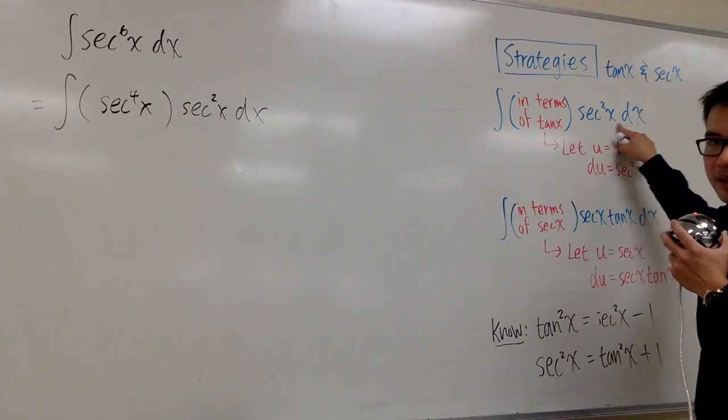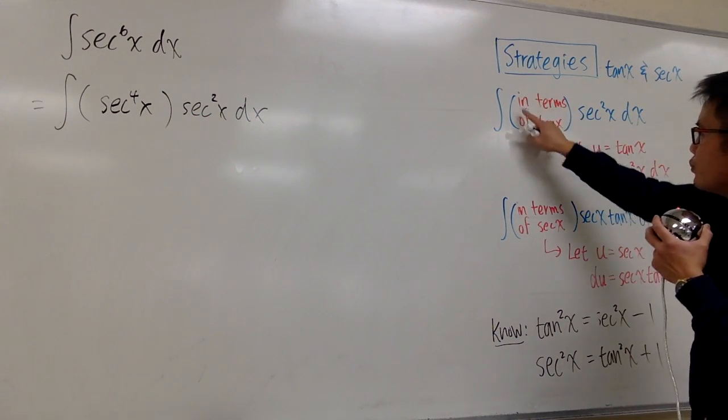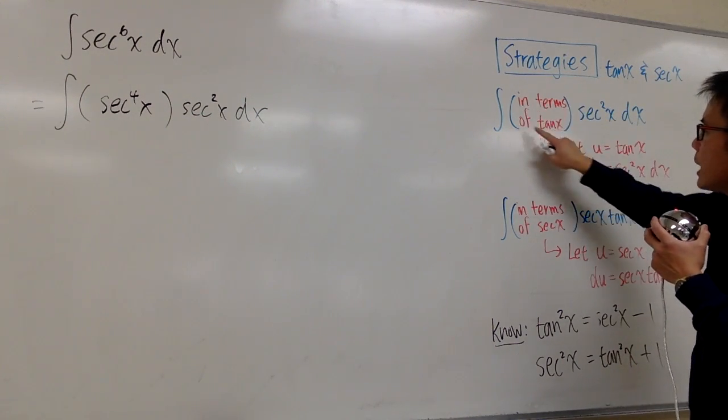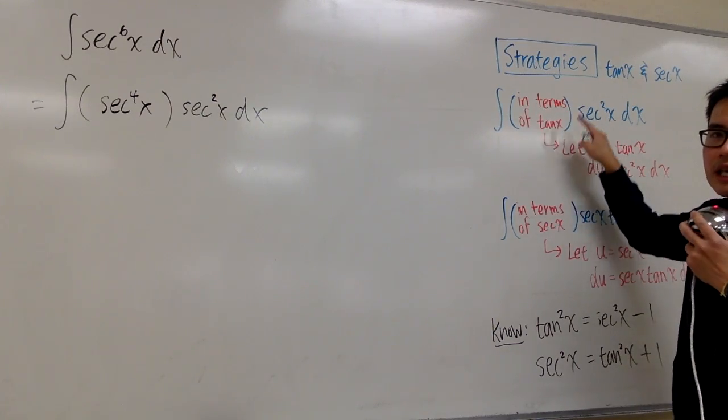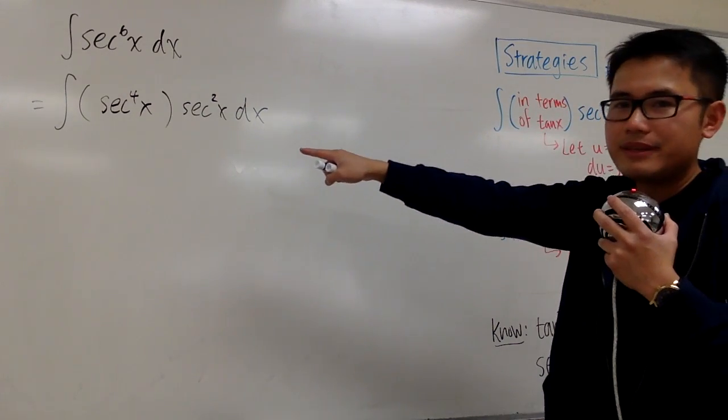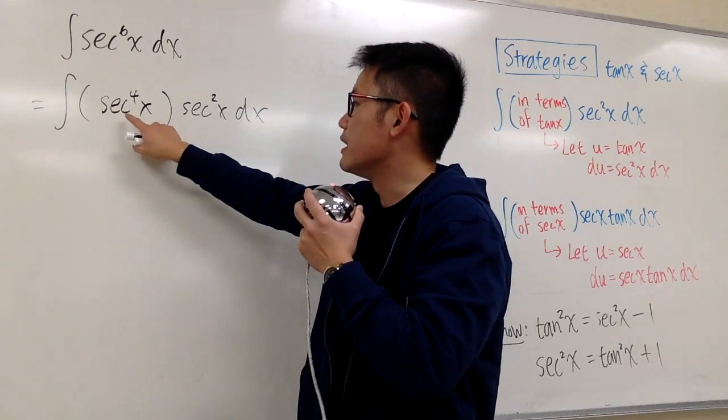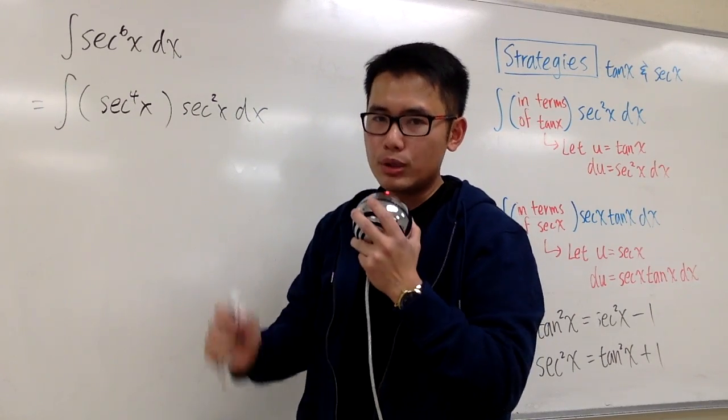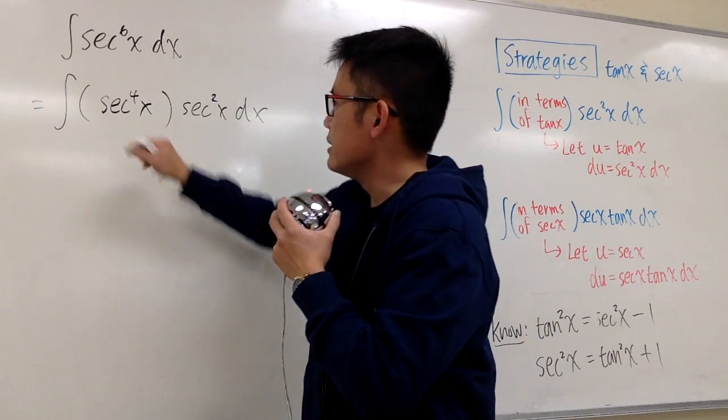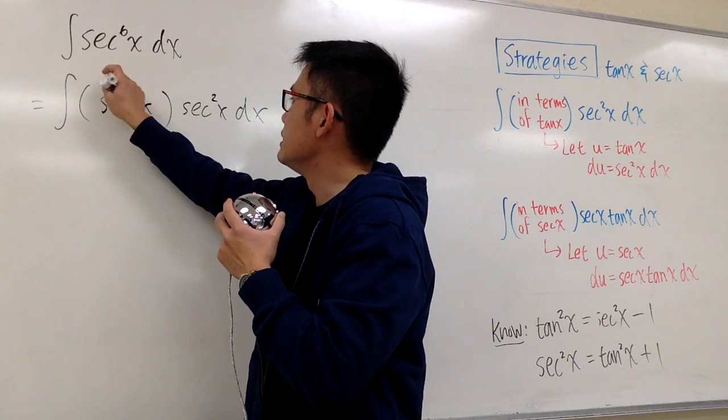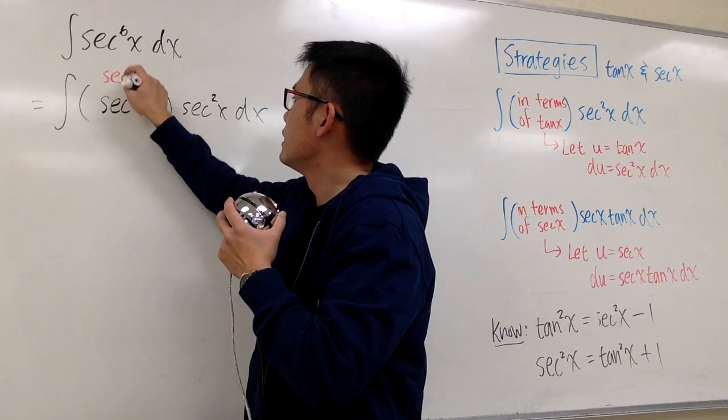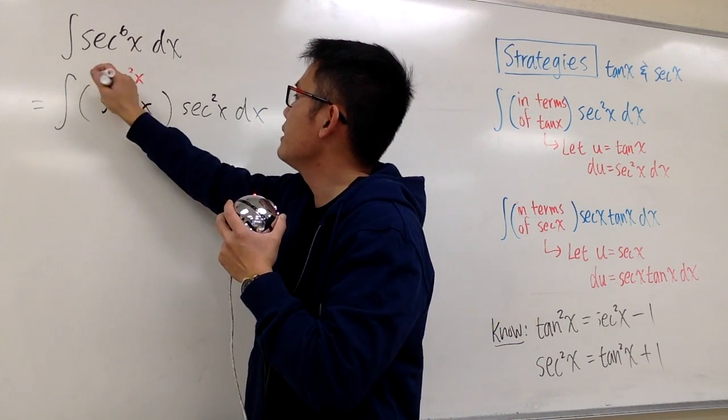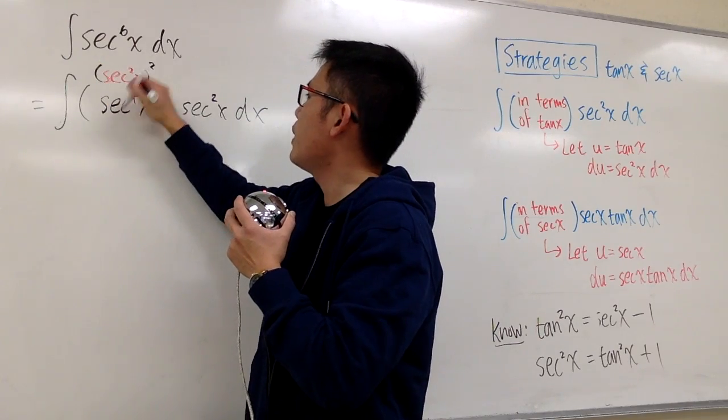So we are done with this part, but now I'll have to rewrite the first part in terms of tangent x. Can we do that easily? Yes we can, because this is secant to the 4th power, it's an even power, it's a multiple of two. This is the same as saying secant square x, and then raise that to the 2nd power.